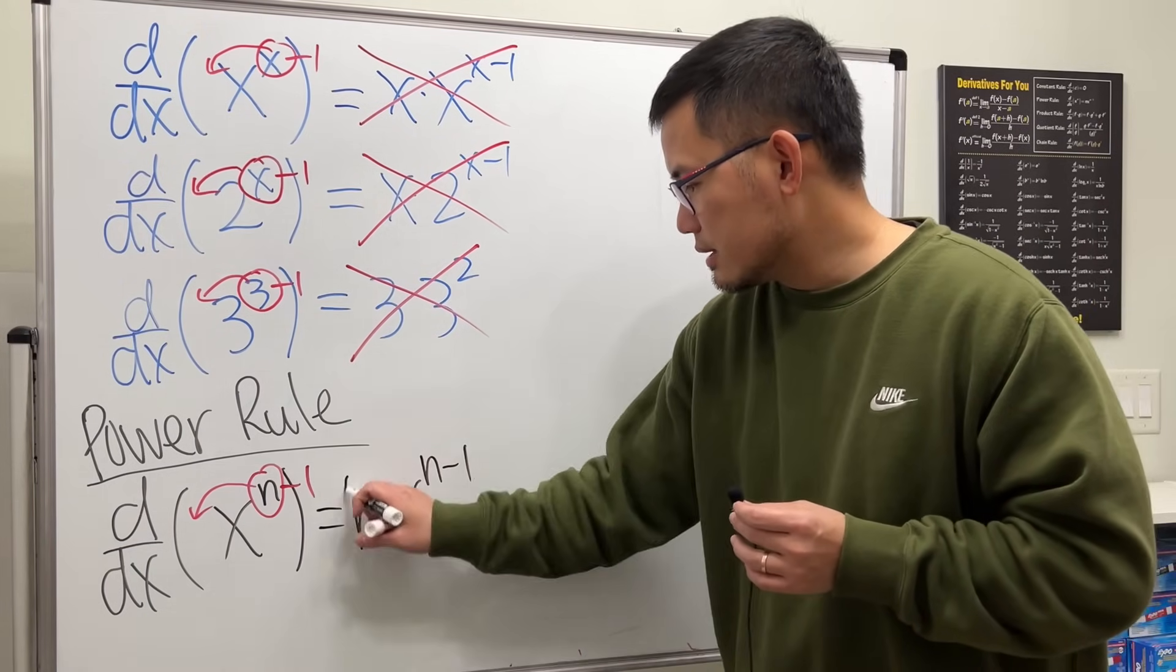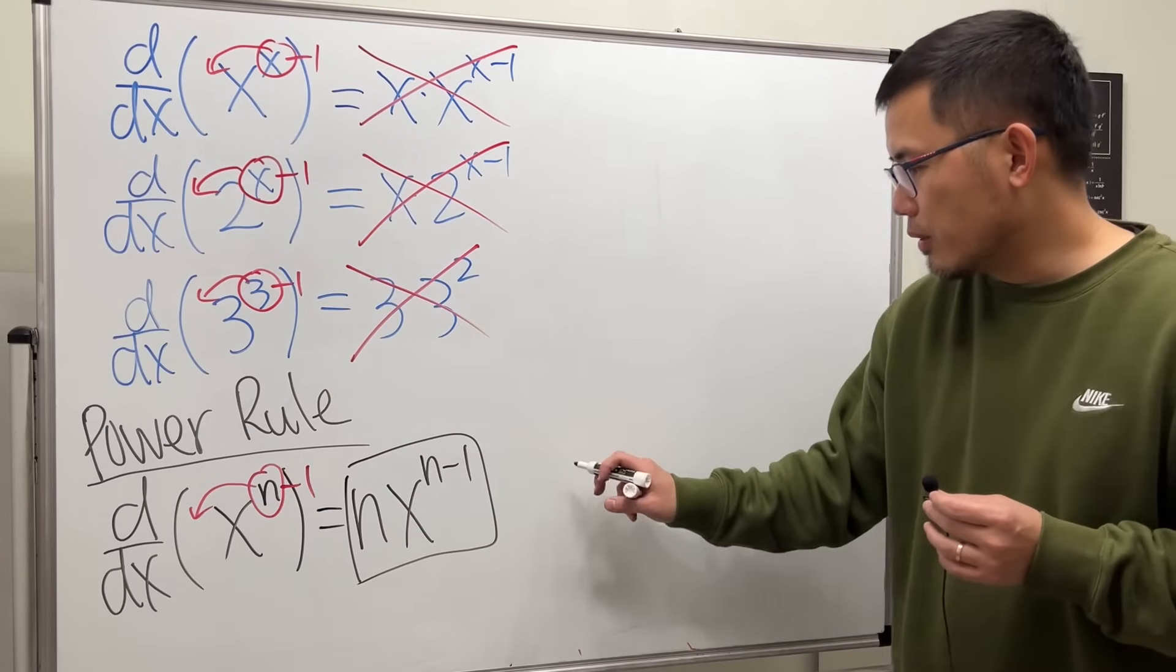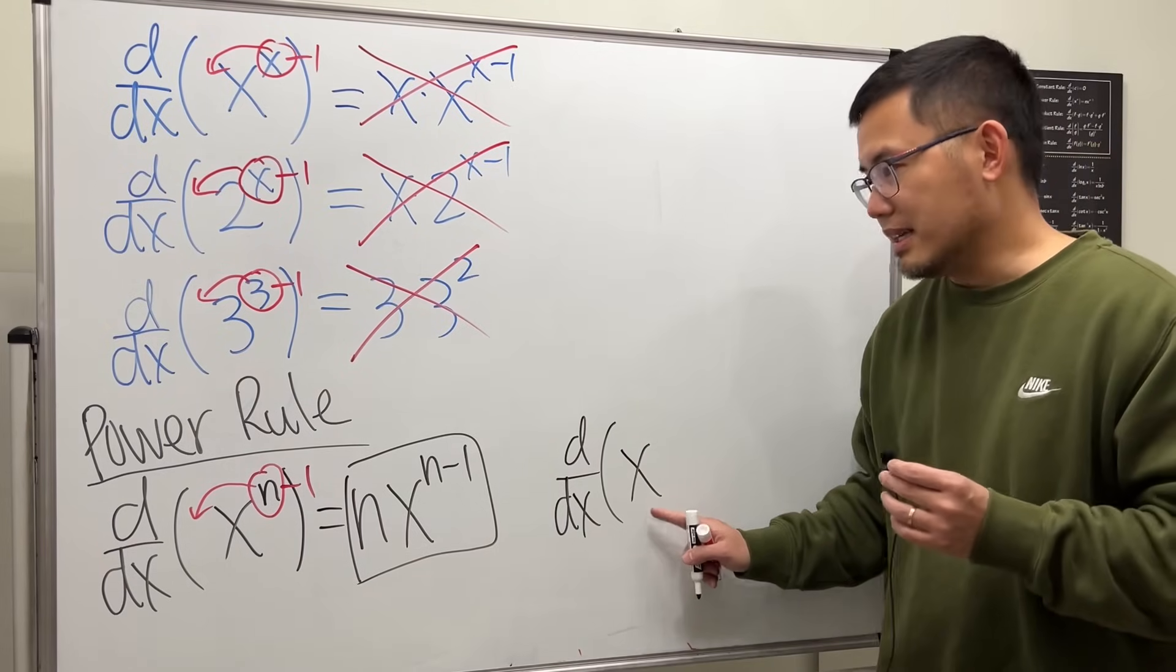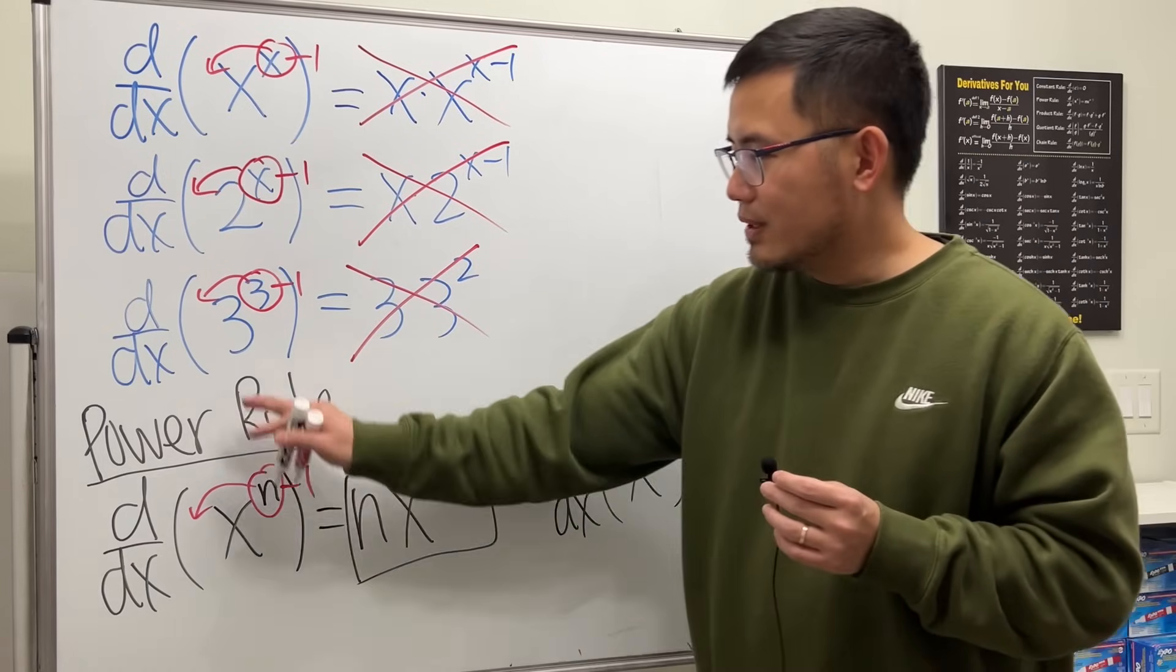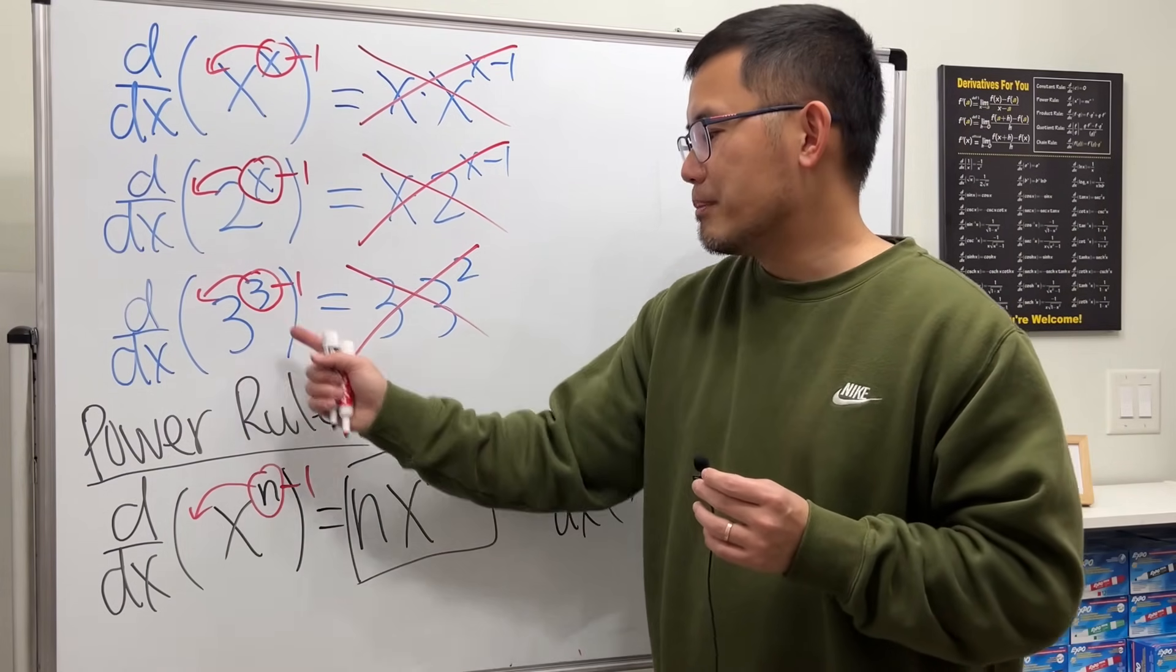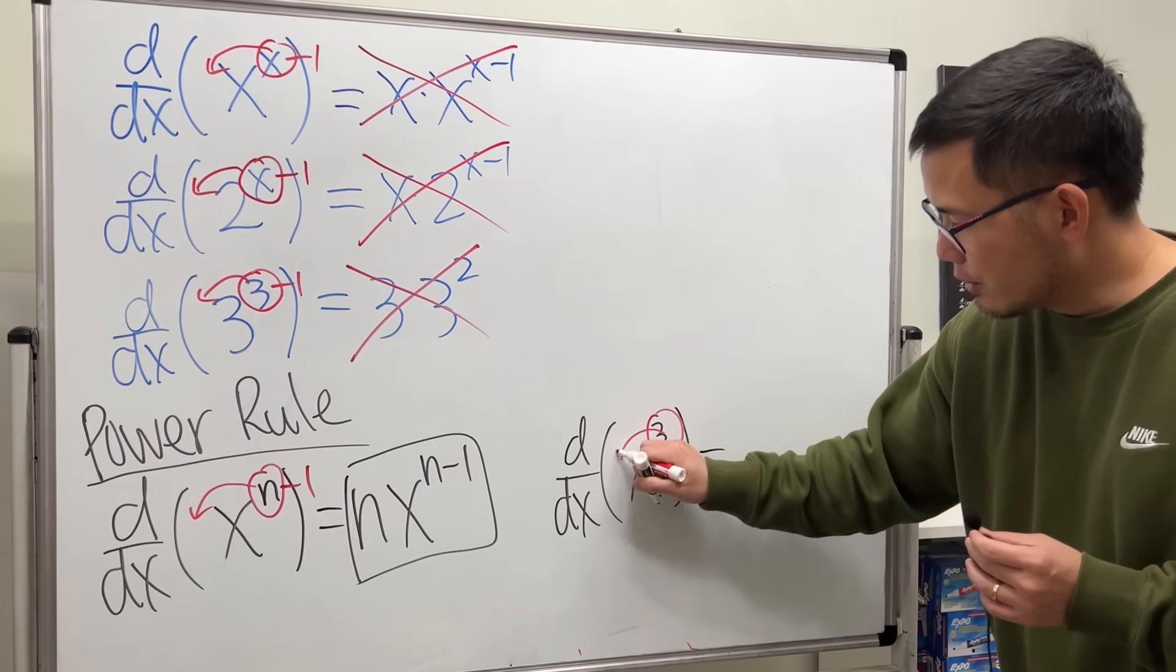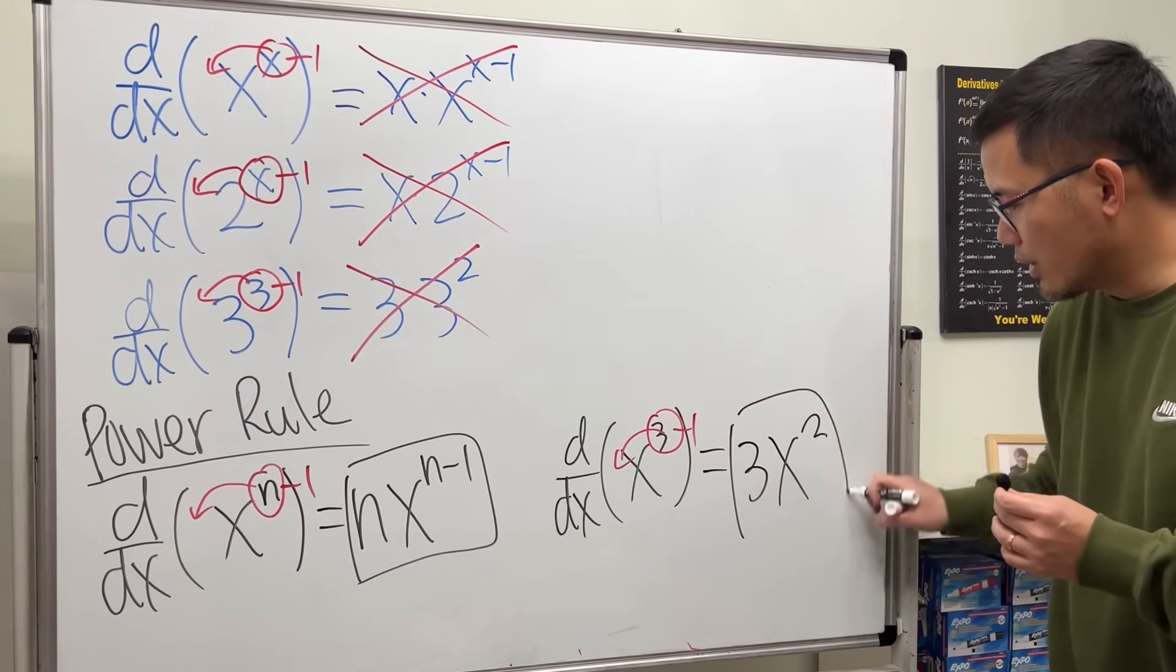Just a real quick example. If we take the derivative of x to the 3rd power, you see the difference between this and that? I need to have the x in the base and then number for the power, just like that. This gives us what? Yeah, put the power to the front and minus 1, 3x squared. This is legit.